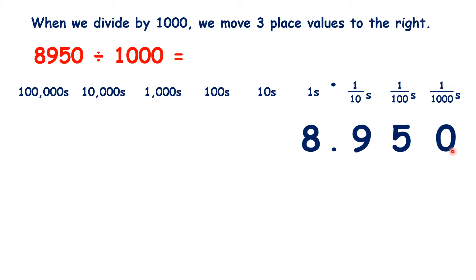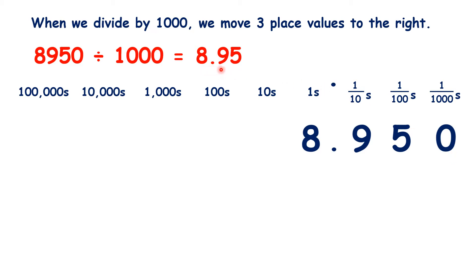Again, we can ignore the zero at the end of a decimal number, because all it tells us here is that we have no thousandths — but just writing 8.95 also tells us this. So although 8.950 isn't wrong, we would usually just write 8.95 here.